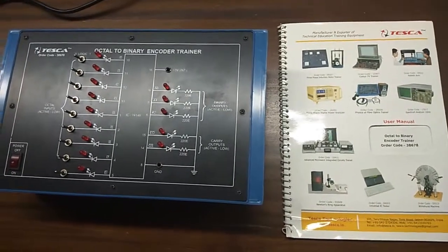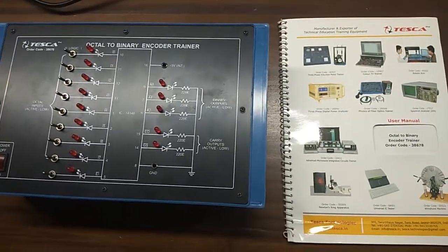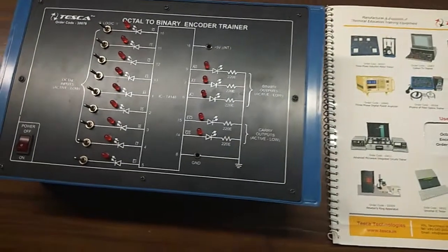Today, I am going to show you our octal to binary encoder trainer kit, order code is 38678.